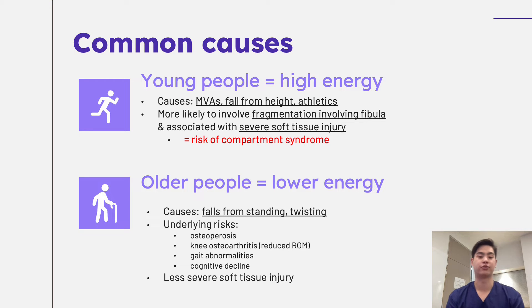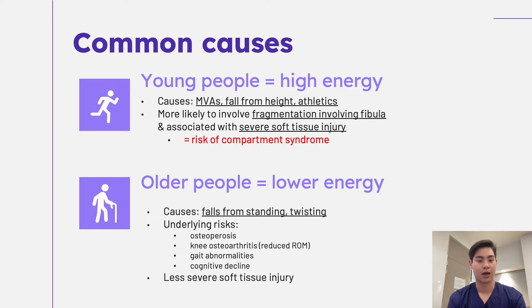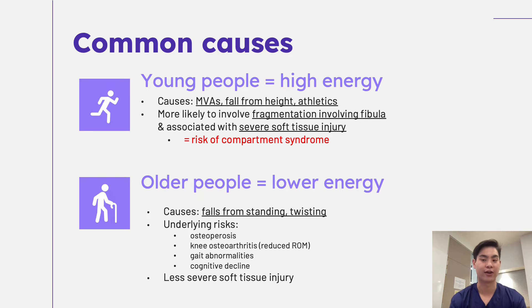Looking at the younger patient population, the causes are generally from high energy, high velocity impacts — things like car crashes, falls from height, and athletic incidents. Because of this high energy impact, it's more likely to cause fragmentation and involvement of the adjacent fibula as well. It's important to keep an eye out for adjacent structures that could be damaged, and high energy impacts can also lead to surrounding soft tissue injury and neurovascular damage, leading to things like compartment syndrome.